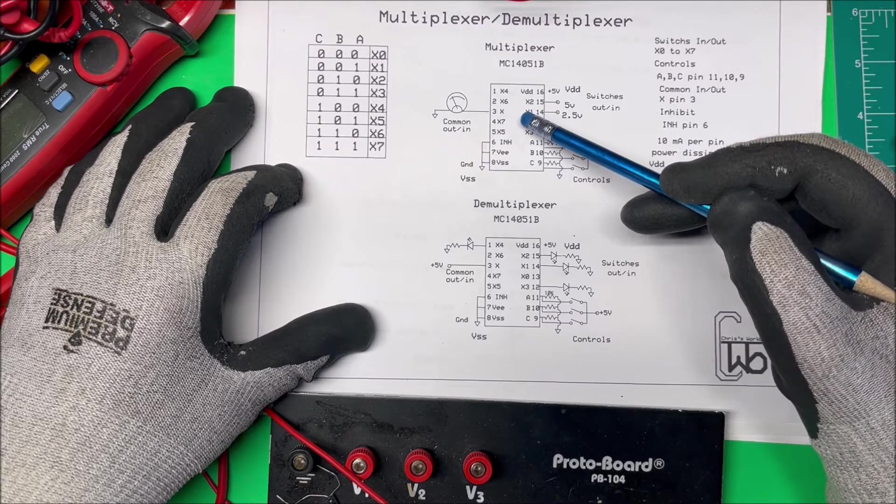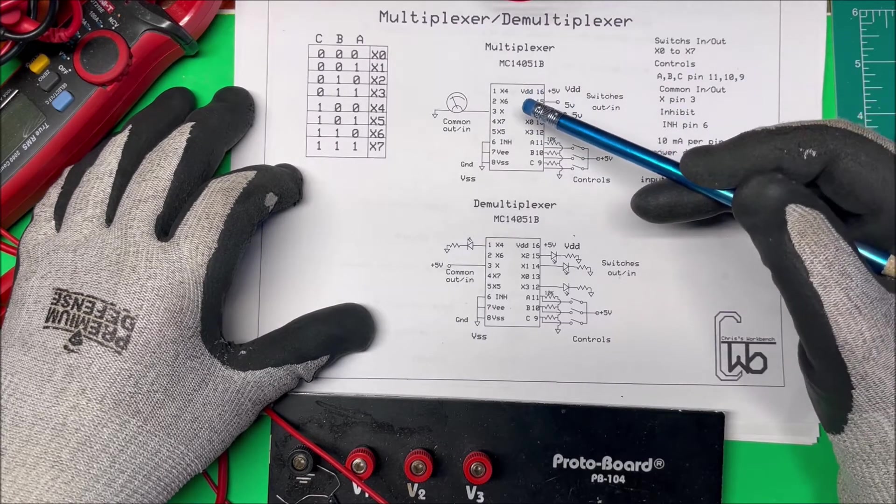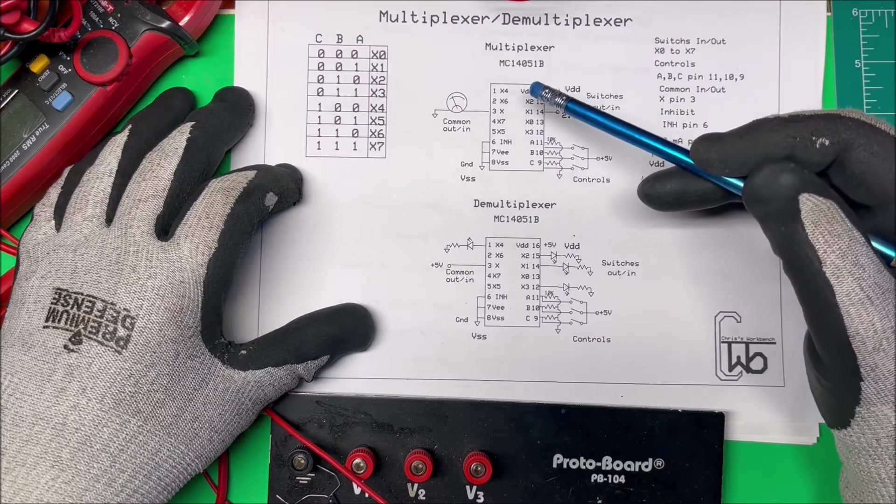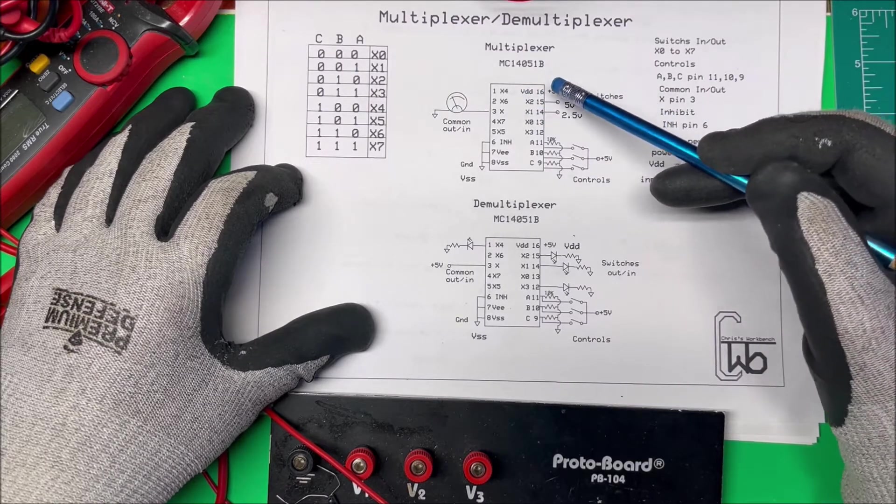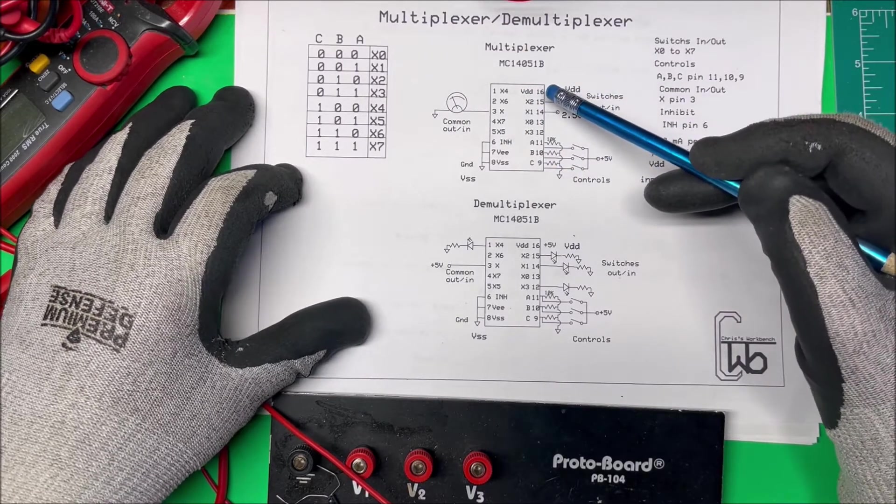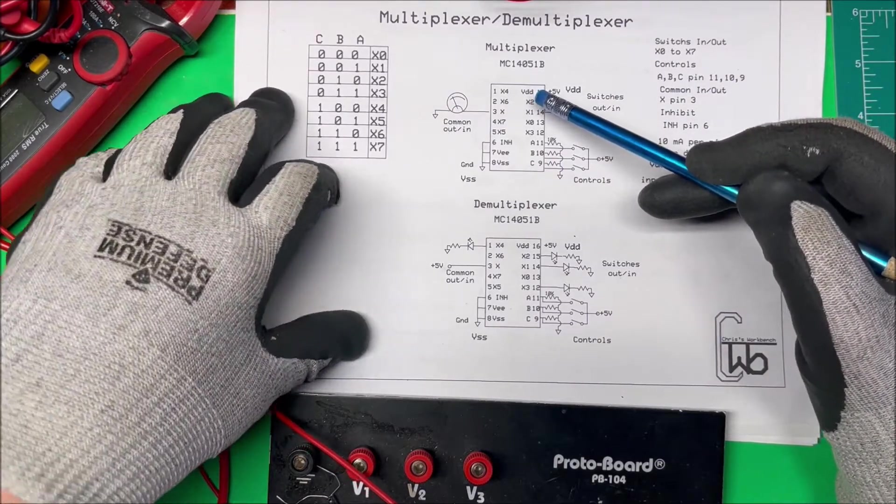I have an ESP8266 and it only has one analog input pin, and I want to be able to monitor temperature, humidity, barometric pressure, and ambient light through that one analog input pin.